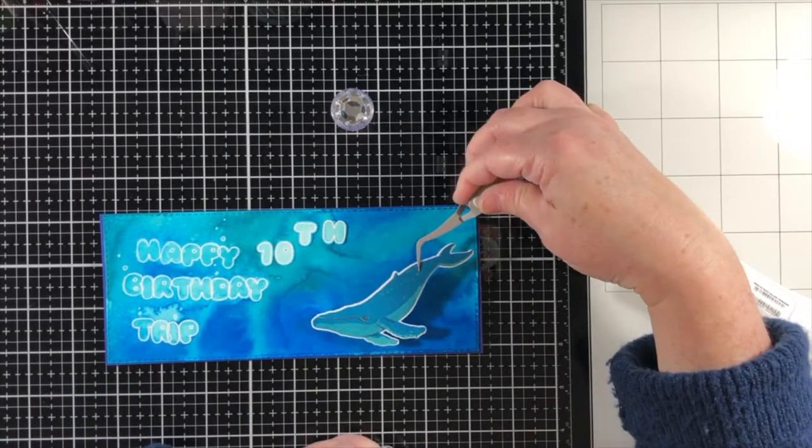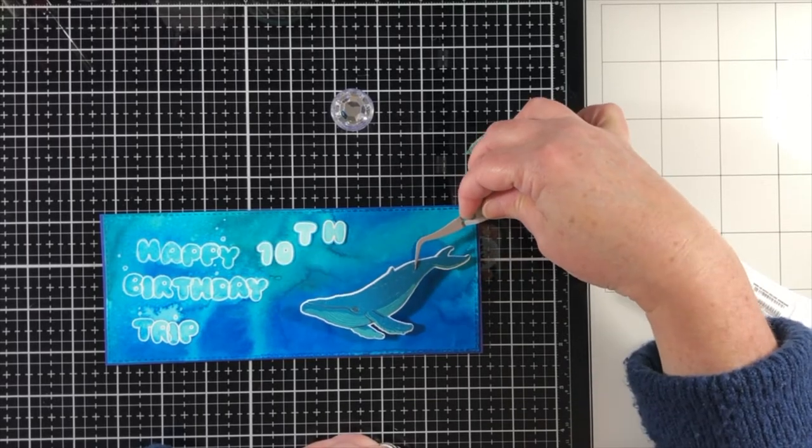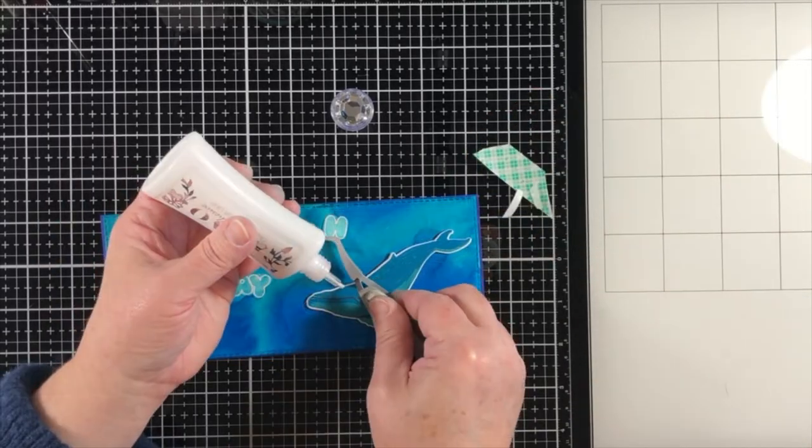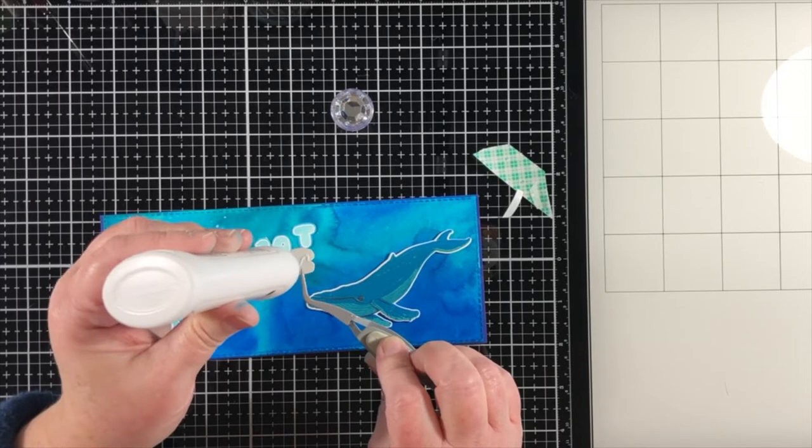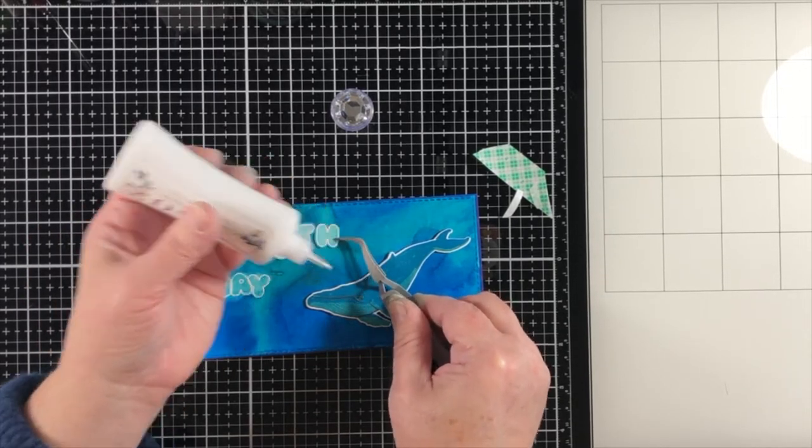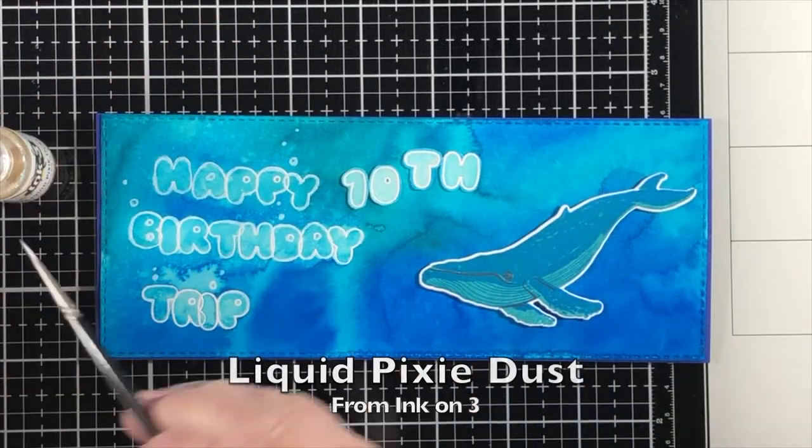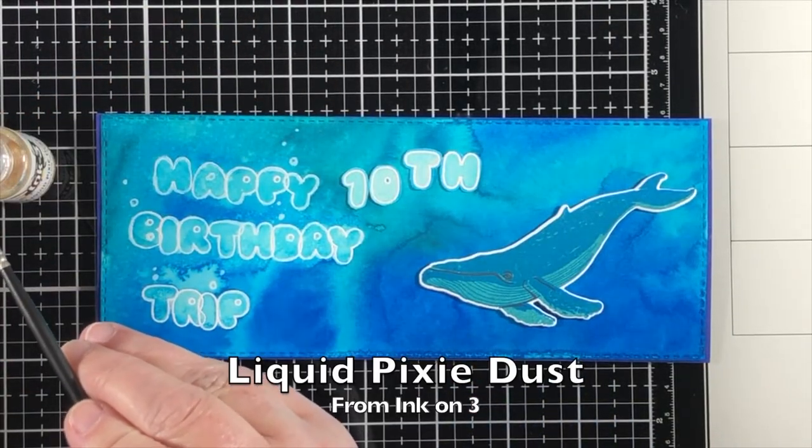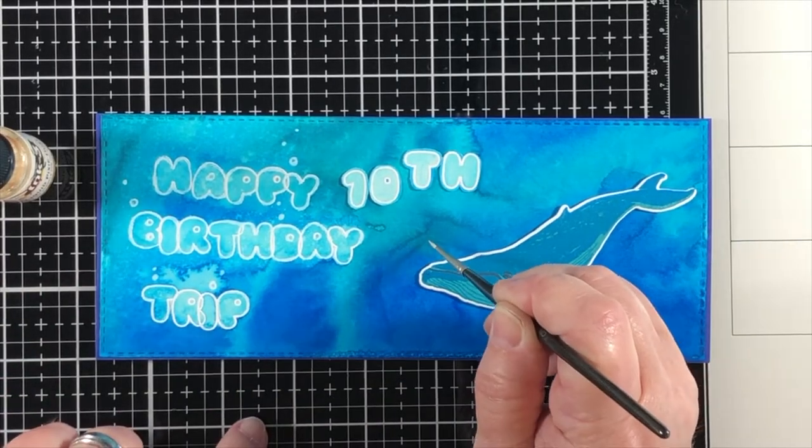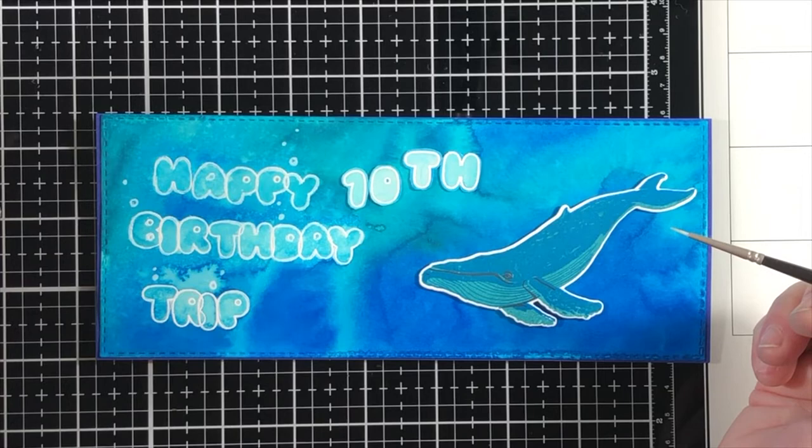So I've got some double sided foam on the back of the whale. And I die cut that with the coordinating die from Hero Arts. And now I'm going to adhere these letters with liquid glue. I'm not popping them up. Watercolor paper is thick enough that I did not feel like I needed to add any foam underneath it.